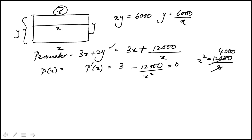So x is the square root of 4,000, which is the square root of 400 times 10. The way I'm splitting it, that's 20 root 10.